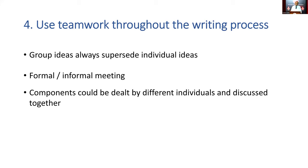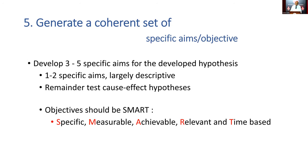When generating your hypothesis and objectives, don't have a large number — limit specific objectives to about three to five. It is good to have the first one or two objectives mainly providing descriptive information, and then use additional objectives to show cause-effect relationships. Follow the SMART approach: objectives should be Specific and not too broad, clearly Measurable, Achievable within the time frame and available resources, Relevant, and Time-based.